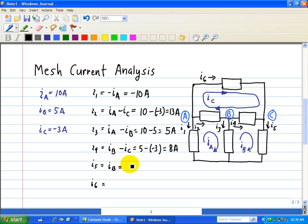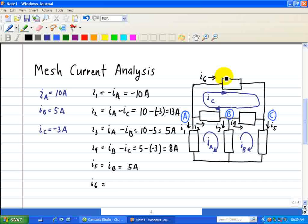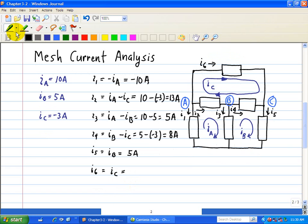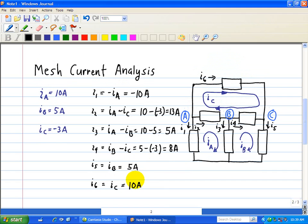Finally, we have I6. The only mesh current going through I6 is IC, which is in the same direction, so I6 equals IC, and that's equal to minus 3 amps. So that's how you describe the element currents in terms of the mesh currents that we assigned here for this circuit.